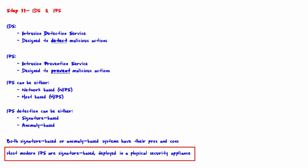Most modern IPS are primarily signature-based, employed in a physical security appliance, and this is recommended for the needs of the majority of networks. Signature-based IPS can be deployed in a physical security appliance such as a firewall that sits on the perimeter of your network. You will need to obtain a subscription from the vendor to keep your signatures up to date. Generally, the signatures update automatically on a daily basis, similar to that of antivirus. That is the end of this lecture — thank you very much for watching.